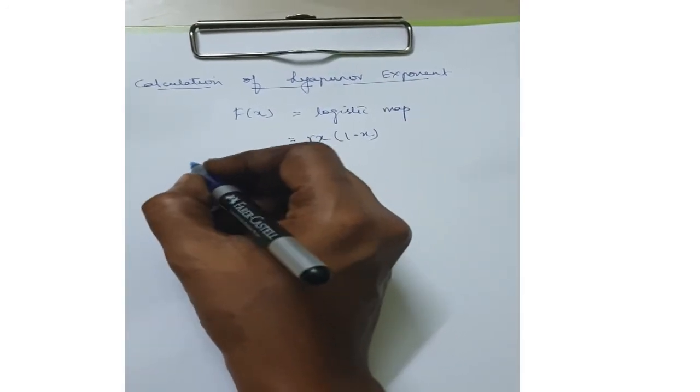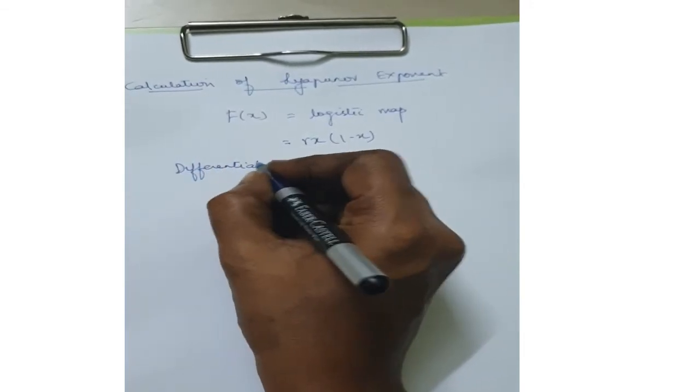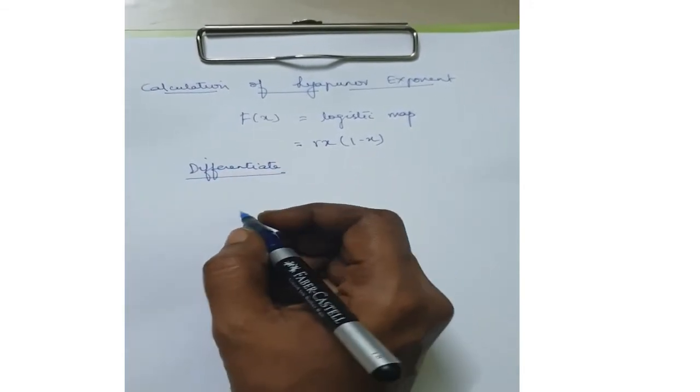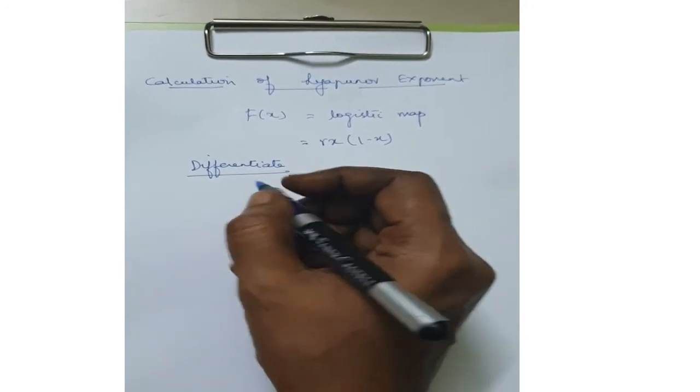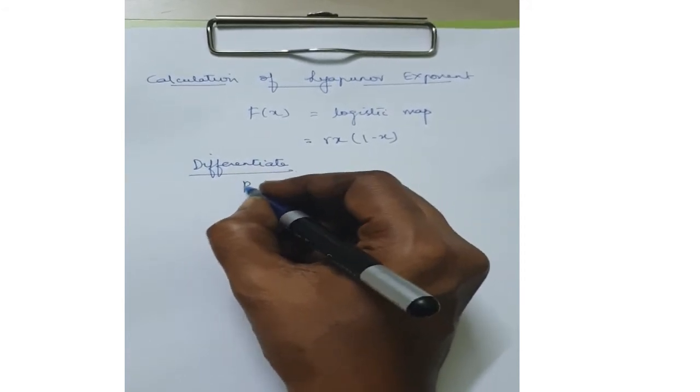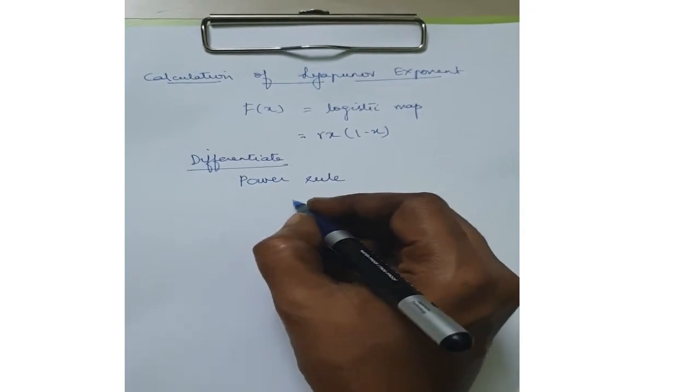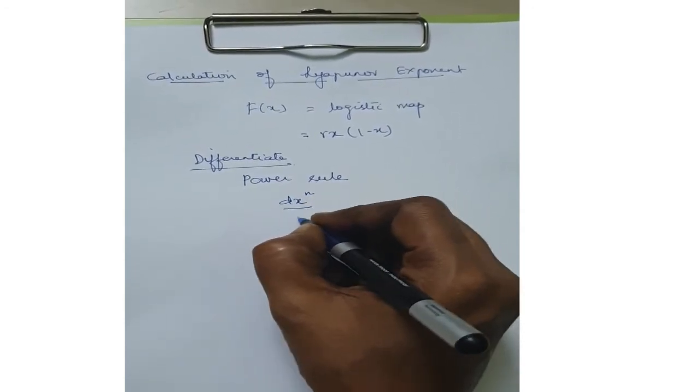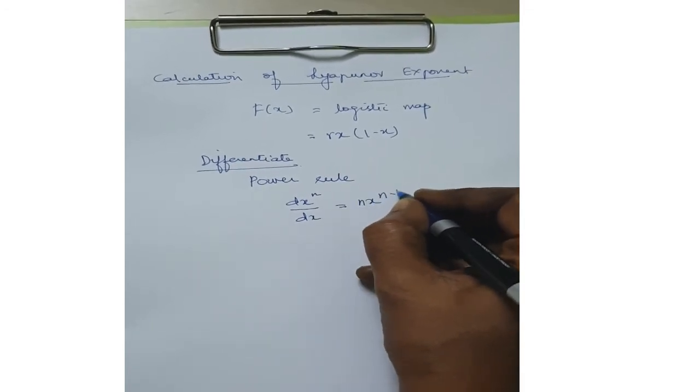To find the Lyapunov exponent, we need to differentiate the equation. Recall the differentiation rules we learnt in school. For differentiating the logistic map, we need the power rule which is d(x^n)/dx is equal to n x^(n-1).